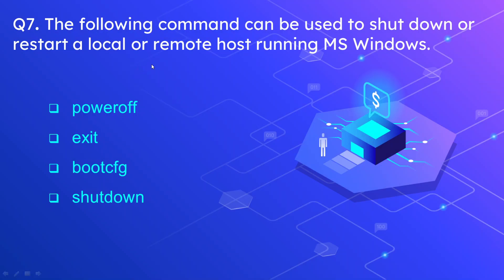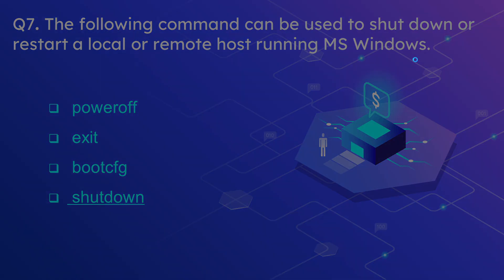Question 7: Which command can be used to shut down or restart a local or remote host running Microsoft Windows? The options are poweroff, exit, boot, cfg, and shutdown. The correct answer is shutdown. The shutdown command is used to shut down or restart a local or remote host running Microsoft Windows.